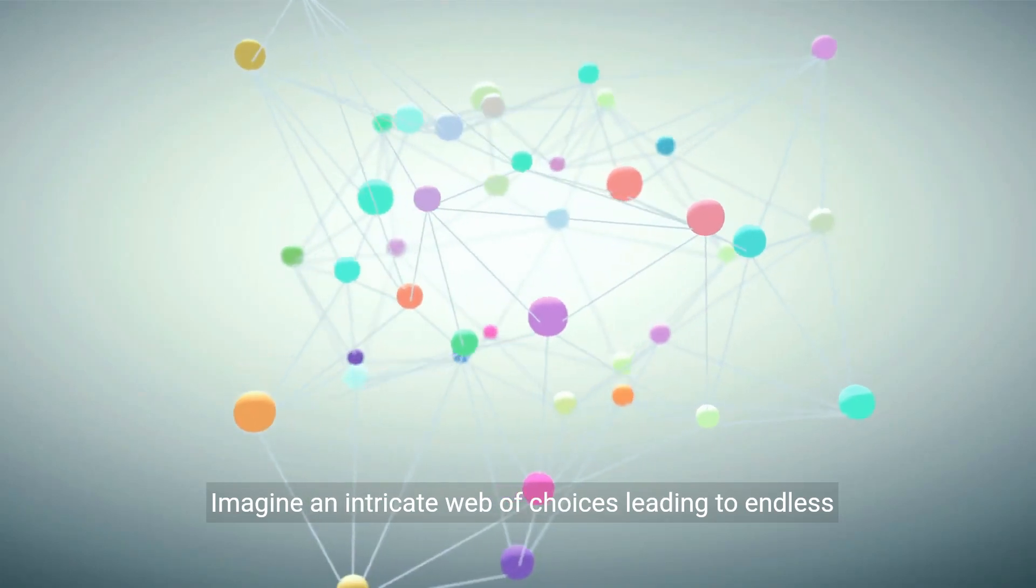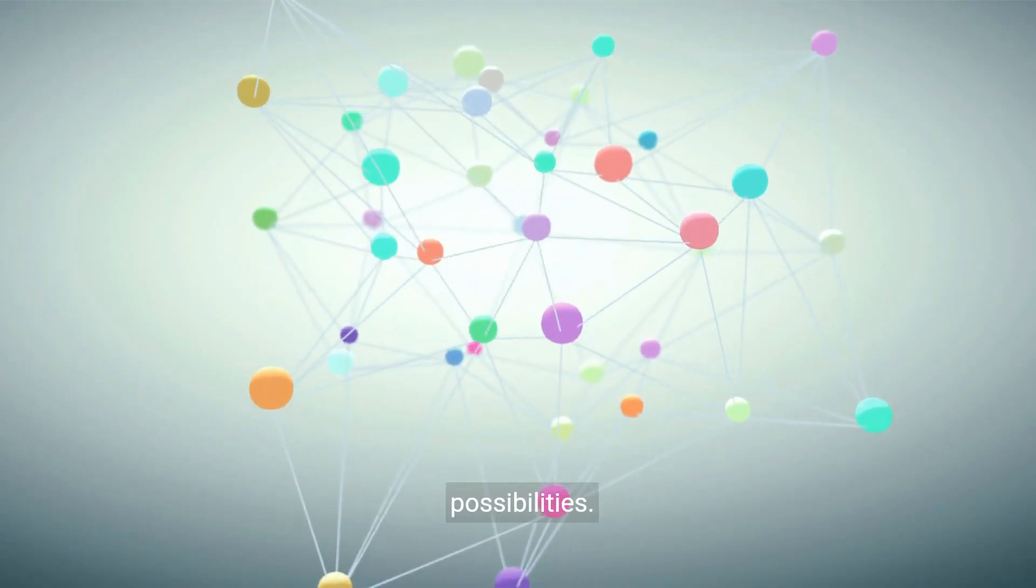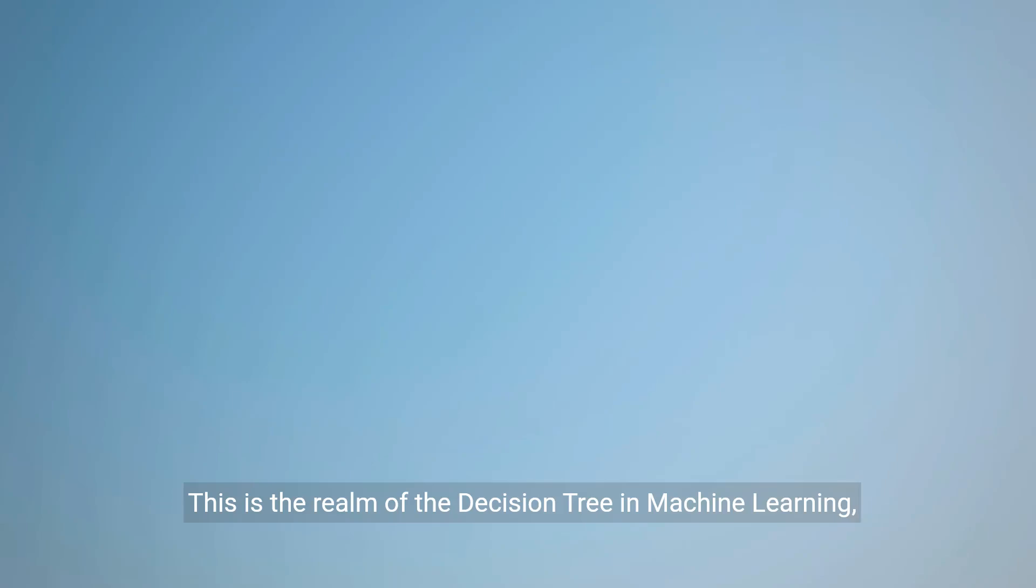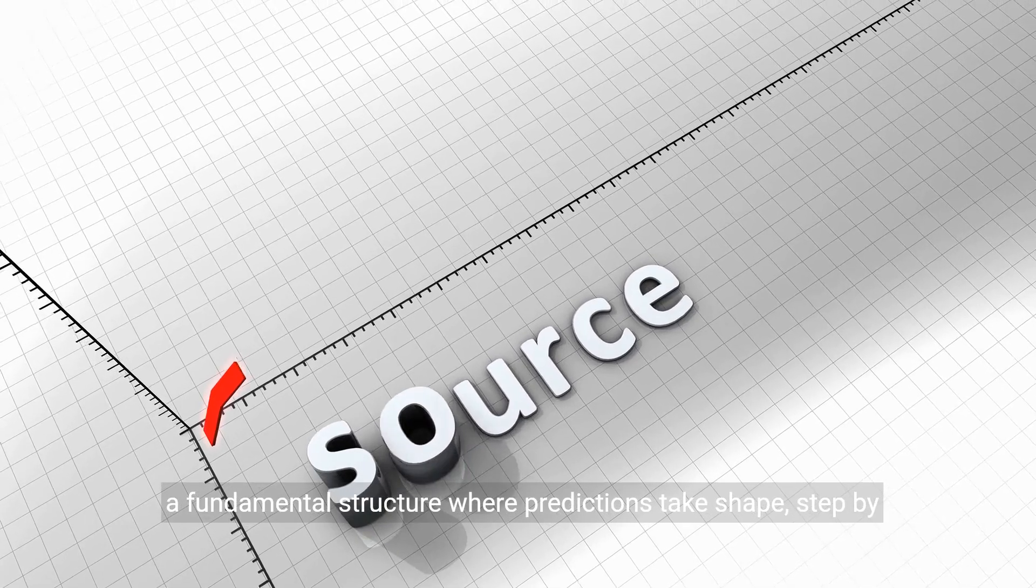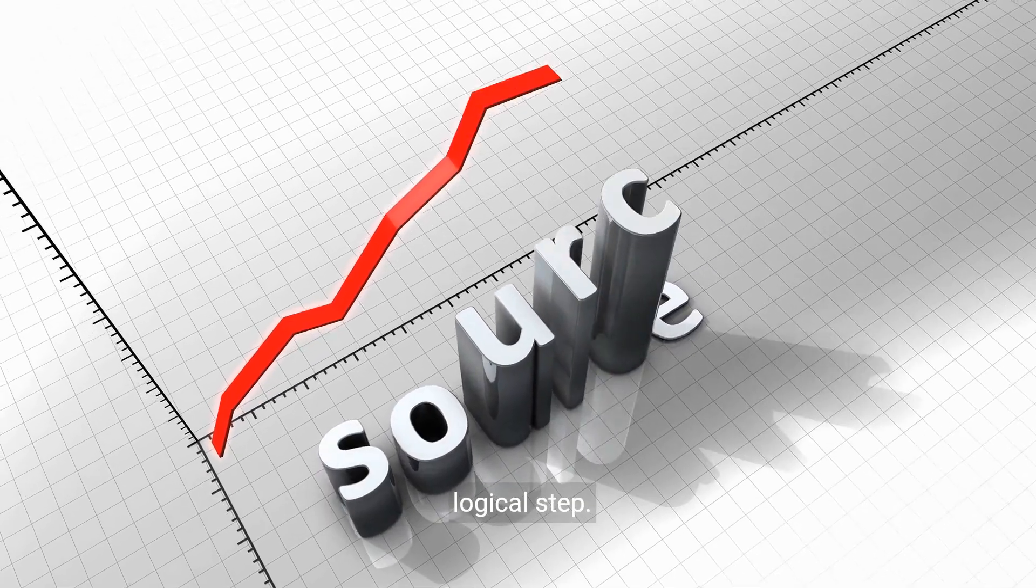Imagine an intricate web of choices leading to endless possibilities. This is the realm of the decision tree in machine learning, a fundamental structure where predictions take shape, step by logical step.